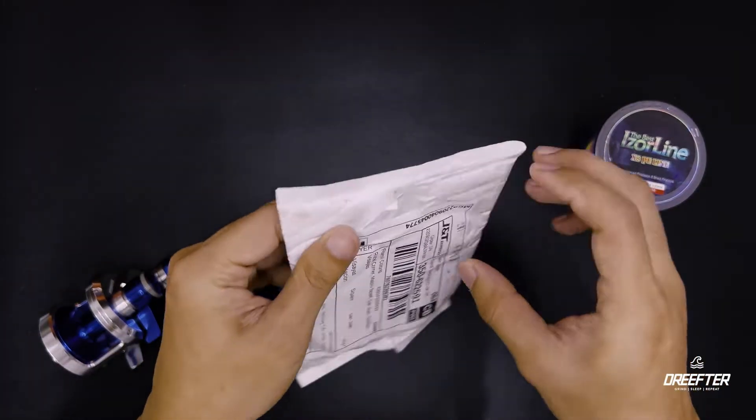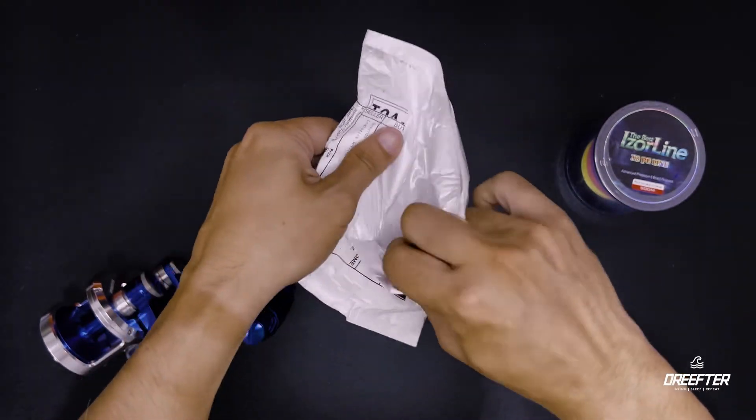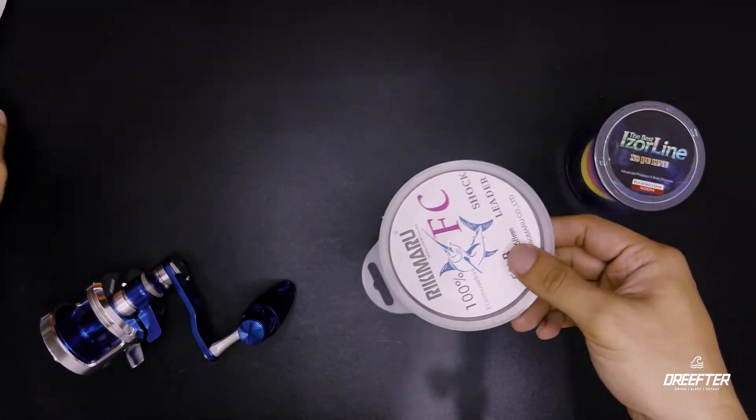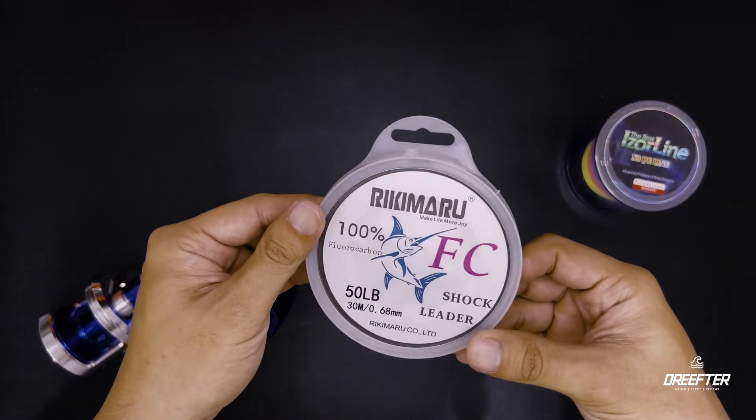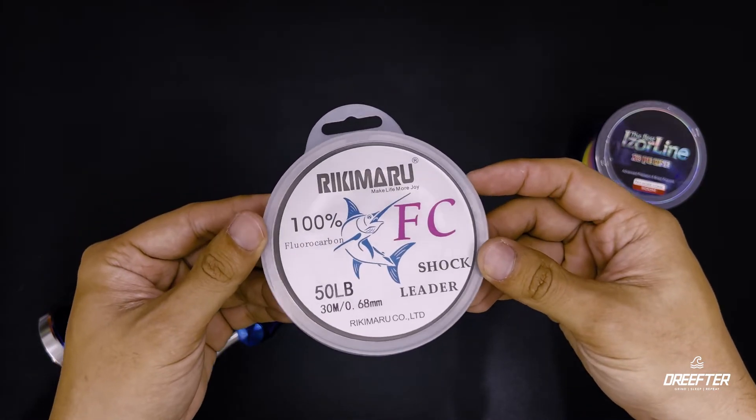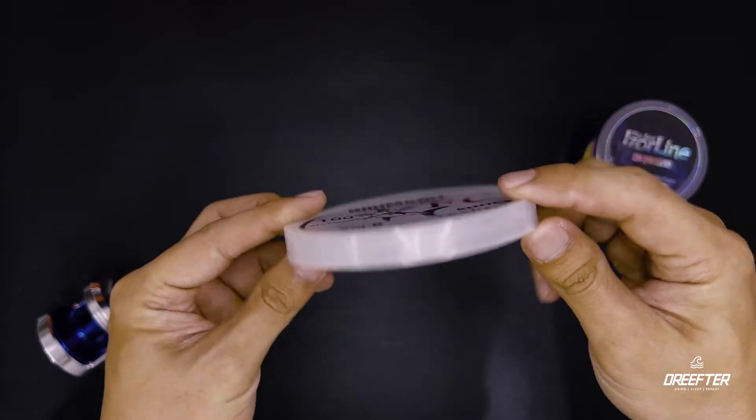And finally, sa ating leader line, ito kakarating lang yung package, buksan natin. So ito ang Rikimaru 50 pounds na fluorocarbon. So I've been using this leader line for a few months na and so far proven and tested naman.